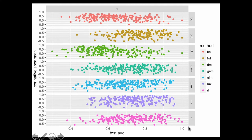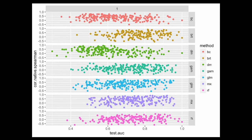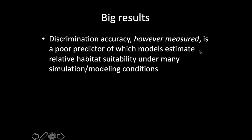We did simulations and built models using a bunch of different algorithms. Since this was simulated data, we could actually ask how well does the true suitability of habitat match our model — what we call functional accuracy, which is close to calibration — versus discrimination accuracy. We just wanted to know if you could pick models that do well on functional accuracy by picking models that do well on discrimination accuracy. The answer is, under most simulation conditions, those two things are not related usefully. On the y-axis, we've got how correlated is the estimated suitability of habitat with the true suitability of habitat, and you just cannot pick a model with good discrimination accuracy and assume it actually estimates relative suitability of habitat usefully.